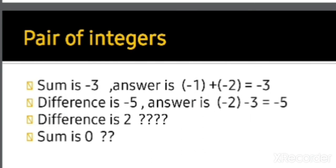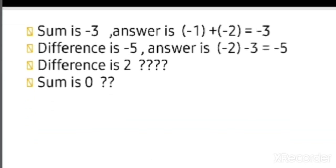For a difference of minus 5, consider the pair minus 2 and minus 3. Since the signs are different, we subtract and apply the additive inverse to get minus 5. For sum equals 0 and difference equals 2, find the appropriate pair.